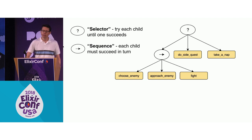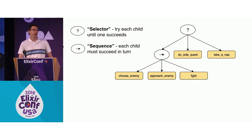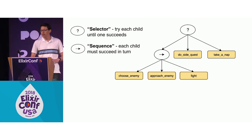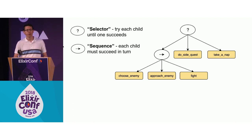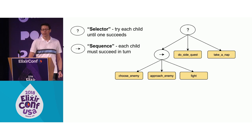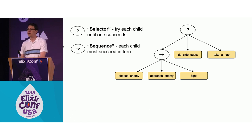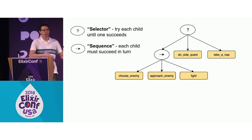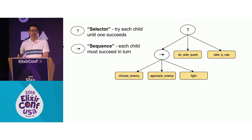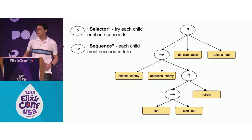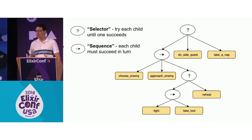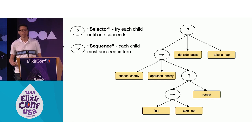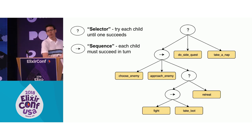Walking through how this would work: it starts, moves down to the first child — in this case, choose enemy. If there are no enemies in sight, choose enemy fails. Because a sequence fails when any children fail, the sequence fails, and the selector moves on to its next child, which is do side quest. But if choose enemy succeeded, it would move on to approach enemy, and if that succeeds, it would move on to fight. By just building up this tree and adding more control nodes, you can build up some interesting and rather complex behaviors described purely by the shape of the tree.